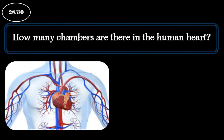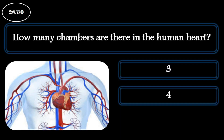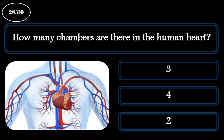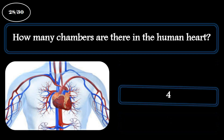Question 28. How many chambers are there in the human heart? A: Three. B: Four. C: Two. The correct answer is four.